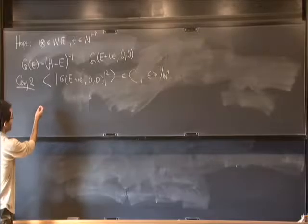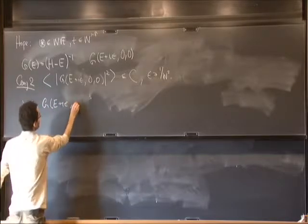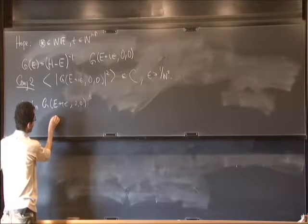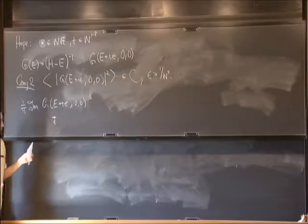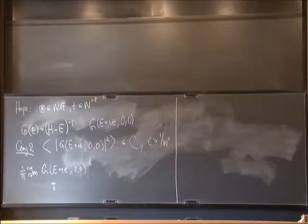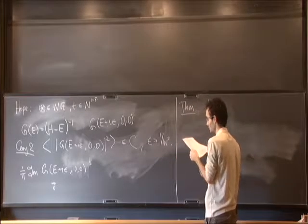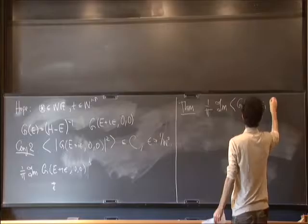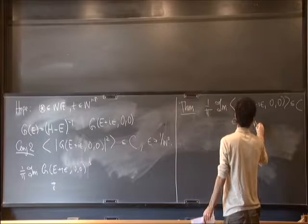Let me emphasize once more: the imaginary part — perhaps times 1 over pi — of the Green function is something like the spectral measure in an epsilon neighborhood of E. The result I want to state is that 1 over pi times the imaginary part of the averaged Green function at energy E plus i epsilon at (0,0) is less or equal to a constant, for epsilon greater or equal to 1 over W to the 1 minus delta.